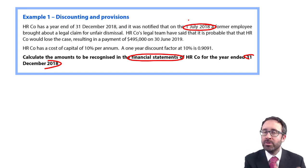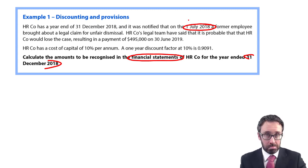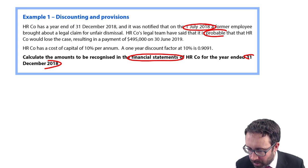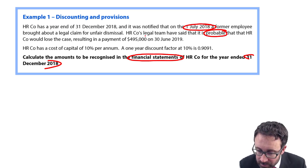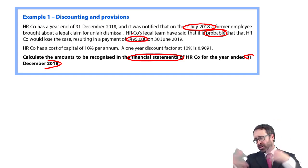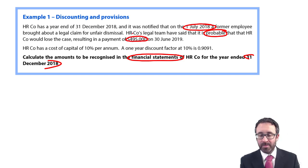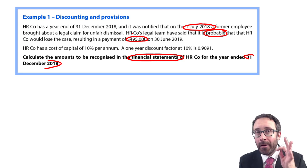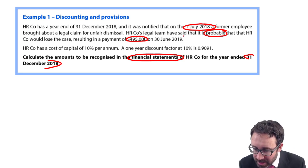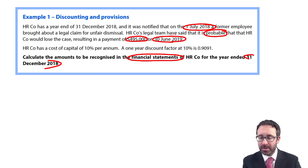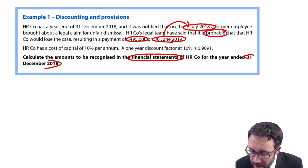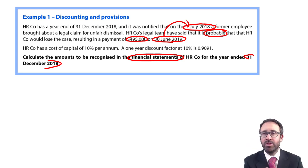Is it probable that we're going to lose it? If that's the case, we need to provide for it. It is probable that HR will lose the case, resulting in a payment of $495,000. So the amount to be recognized in the financial statements is $495,000. But read on carefully — we're told that payment is on the 30th of June 2019, one year after when the provision should be made.